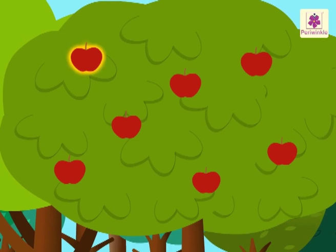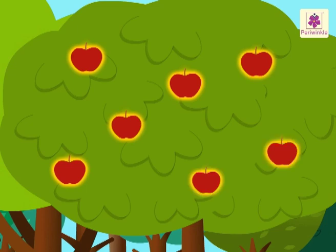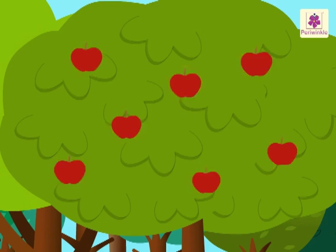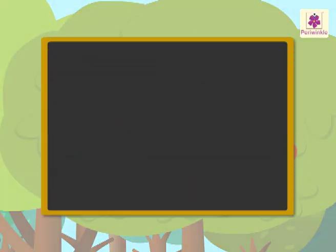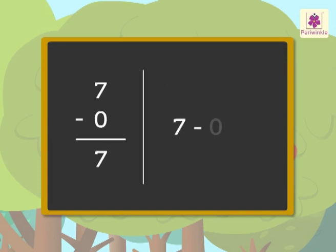One, two, three, four, five, six, seven apples are left on the tree. We can write this vertically as 7 - 0 = 7 and horizontally as 7 - 0 = 7.